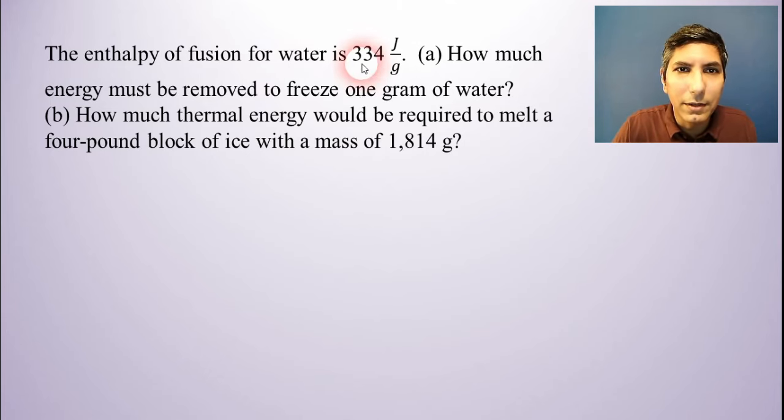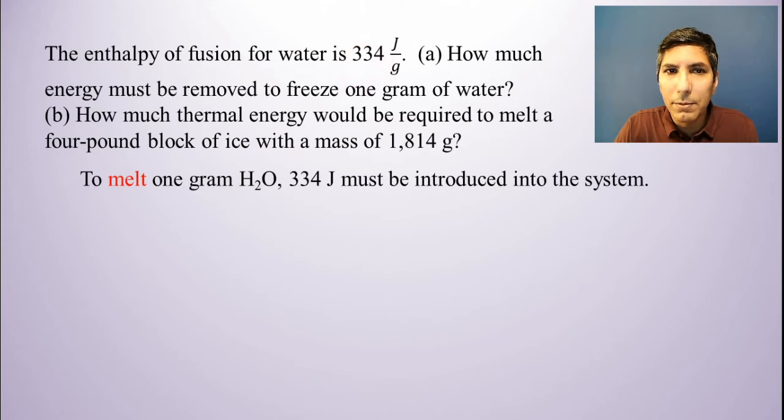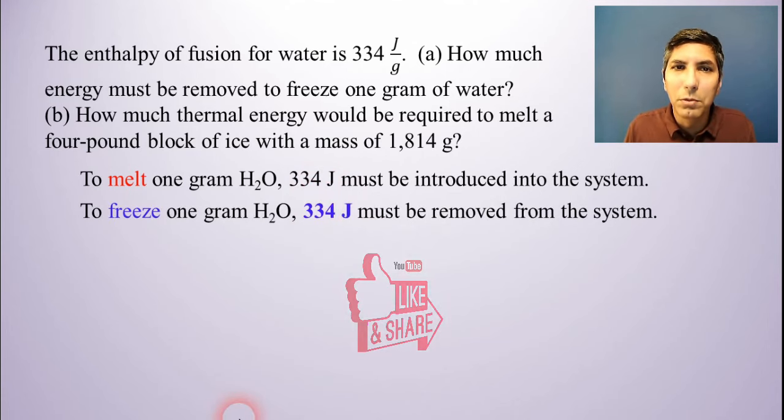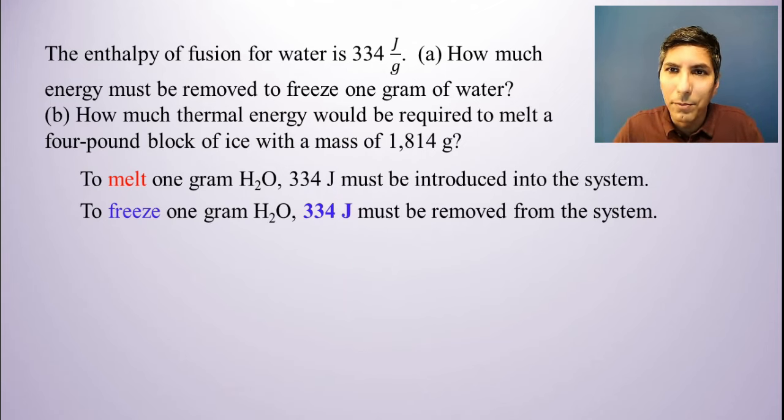Well, this is just asking us about the definition of enthalpy of fusion or heat of fusion. This heat of fusion here tells us that in order to melt one gram of water, one gram of ice, you have to add 334 joules to that water, to that ice. So guess what? If you're going to freeze a gram of water, it's the same amount. It's just going in reverse. And so if you're going to freeze one gram of water, you have to remove that same 334 joules from the water. So that's the answer. It's just 334 joules.